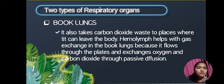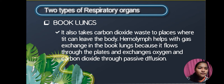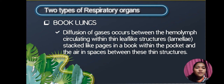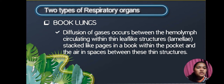Hemocyanin also takes carbon dioxide waste to places where it can leave the body. Hemolymph helps with gas exchange in the book lungs because it flows oxygen through the plates and exchanges oxygen and carbon dioxide through passive diffusion. Diffusion of gases occurs between the hemolymph circulating within the leaf-like structures, or lamellae — stack-like pages in a book — within the pocket and the air in spaces between these thin structures.